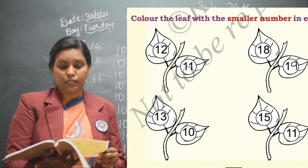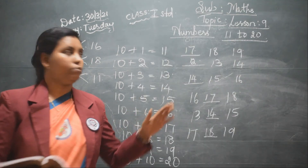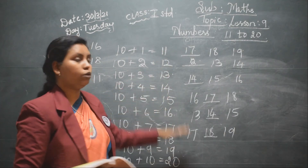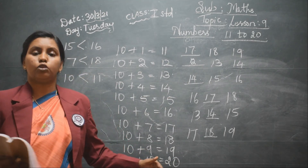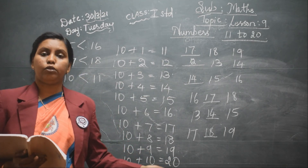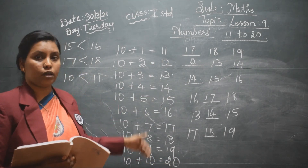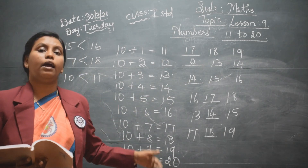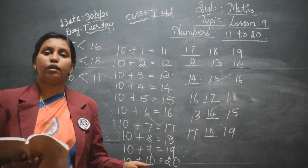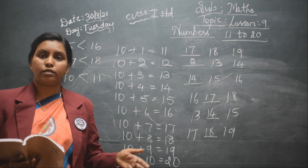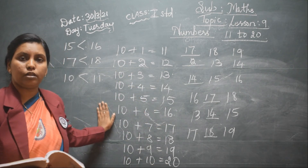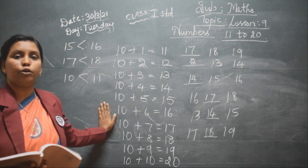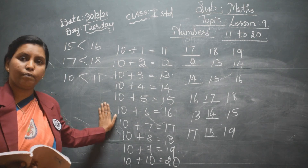So these were the numbers from 11 to 20. You all have to read them in order, and you should write and practice writing in words also. Hope you all have understood. Thank you.